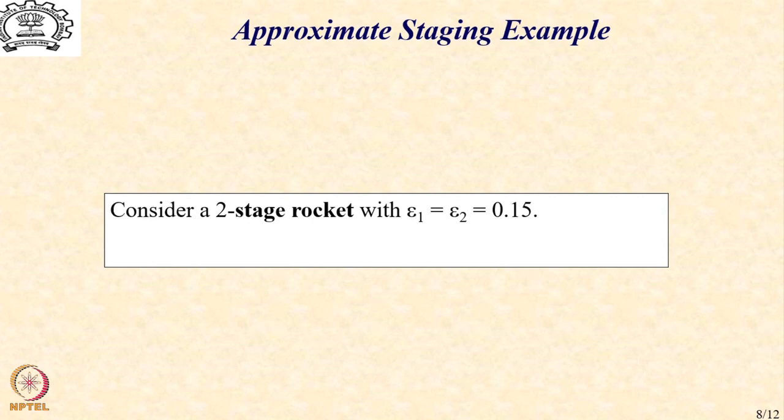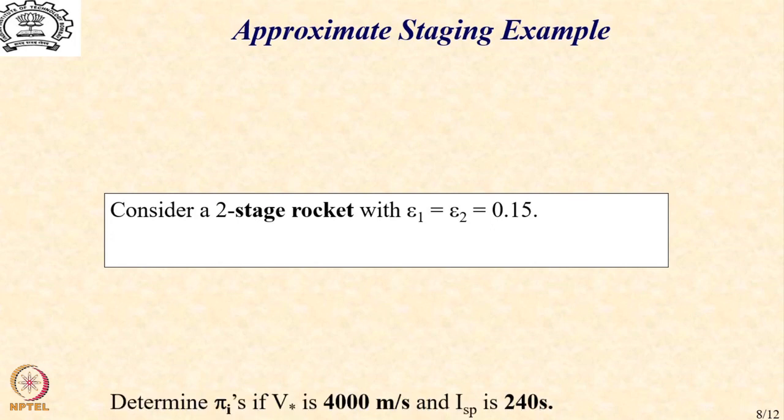Let us demonstrate this idea through the example that we have seen in the previous lecture. So, again, let us consider a two-stage rocket with the same isp of 240 seconds and I would like the velocity to be 4000 meters per second. Recall that we had done this exercise for a two-stage sounding rocket and we had obtained a solution. Please keep those solutions in mind because now we are going to see what this particular methodology gives as far as those solutions are concerned.